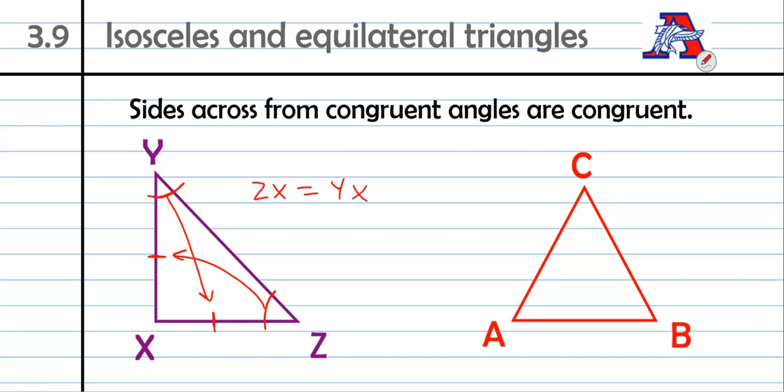So you can mark them, you can write it down, you can do it both ways. That would be an example of an isosceles triangle.